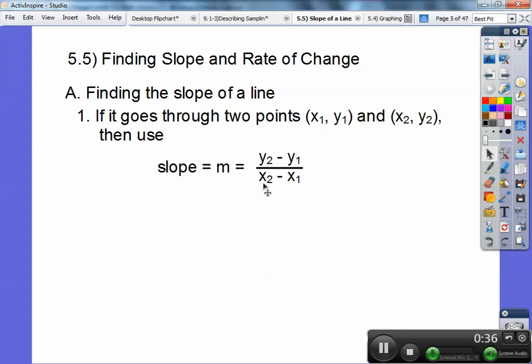And how I remember is x has two legs to it, so it holds up this table better. If you put the y's on the bottom, it only has one leg to it and wouldn't hold up the table as well. So we want four legs on the bottom from the two x's.